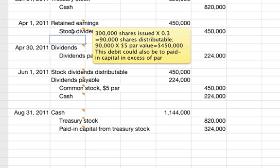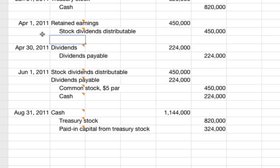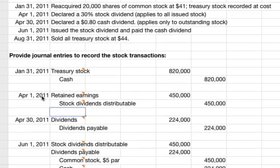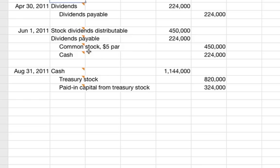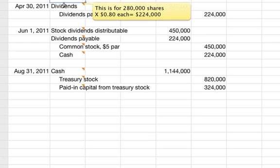For April 30th, the company declared an $0.80 cash dividend. You debit dividends for $224,000 and credit dividends payable for $224,000. The share count used is 280,000, not 300,000, because they bought back 20,000 shares as treasury stock. So 280,000 times $0.80 equals $224,000.